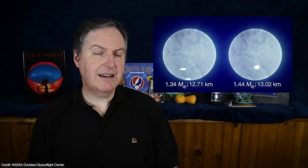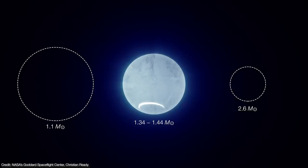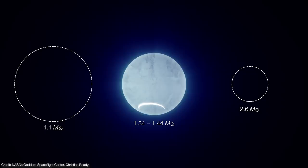These are the most precise measurements yet of a pulsar's mass and size to an uncertainty of less than 10%. That puts J0030 toward the lower end of the pulsar mass range, which is thought to range between 1.1 and 2.6 solar masses.